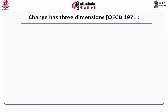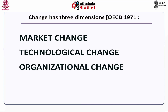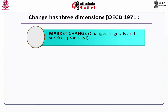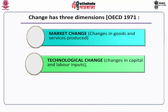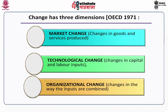Change has three dimensions as suggested by OECD: market change, technological change, and organizational change. Market change means changes in goods and services produced. Technological change covers changes in capital and labour inputs. With regard to organizational change, it refers to changes in the way the inputs are combined.